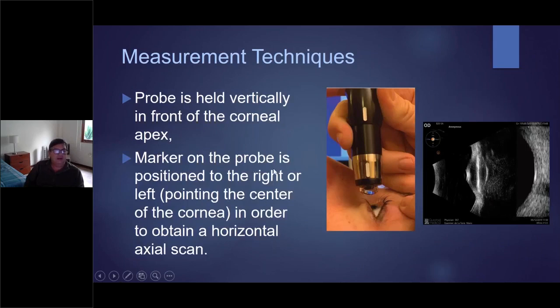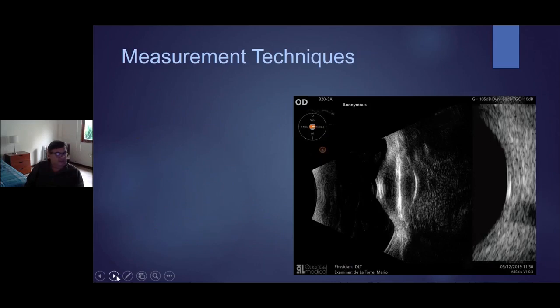With the marker, the probe is positioned to the right or left. I prefer, this is not my case, but I prefer always to point the center of the cornea in order to obtain a horizontal scan. I try to do it - if I put this this way, the probe on the temporal part of the eye should be on top and the nasal part of the eye down, and the macula should be here.